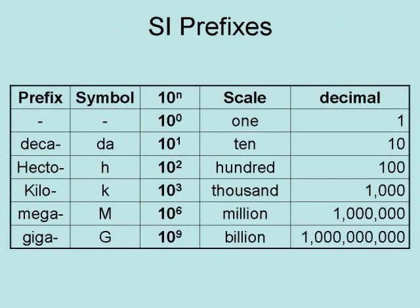Here are the SI prefixes denoting various orders of magnitude. On the large side, you have deca for ten, hecto for a hundred, kilo for a thousand, mega for a million, and giga for a billion.